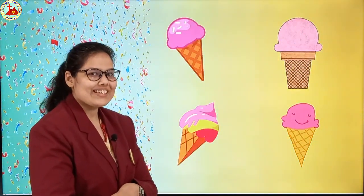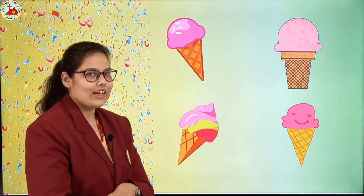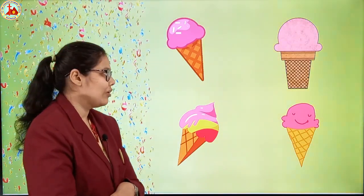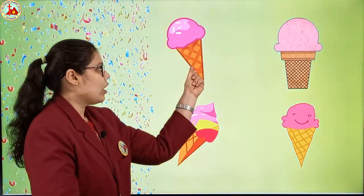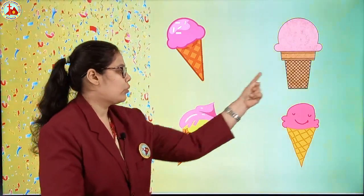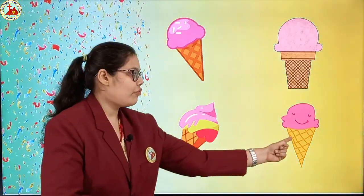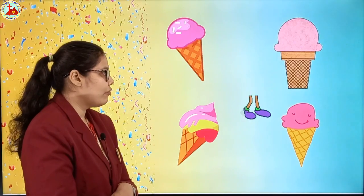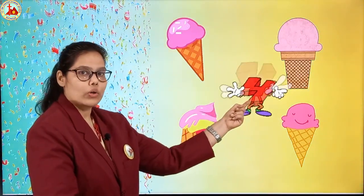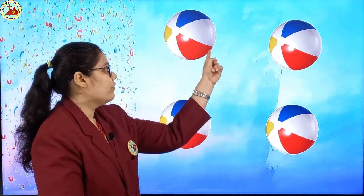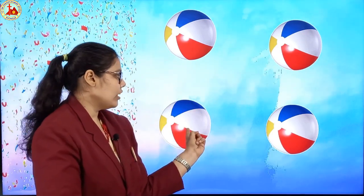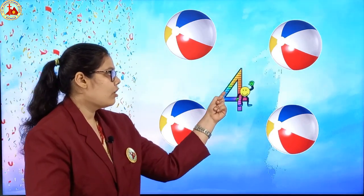Yummy yummy ice cream! You all like to eat? Very good. Now let's count: 1, 2, 3, 4. How many ice creams are there? 4. Which number? 4. Let's see one more picture. What are these? These are balls. Now let's count: 1, 2, 3, 4. How many balls? 4. Which number? 4.